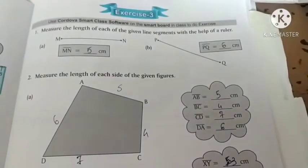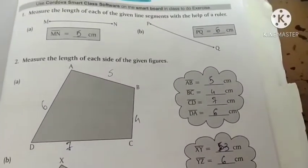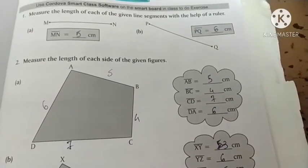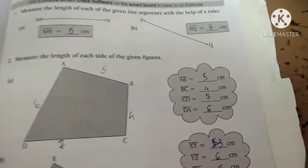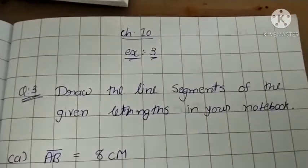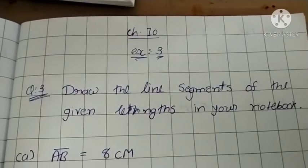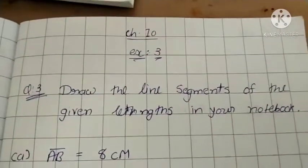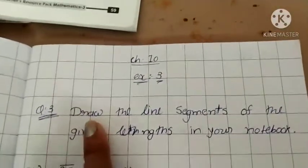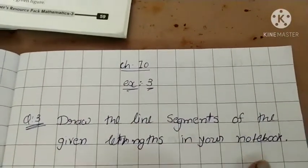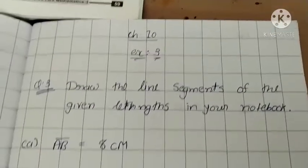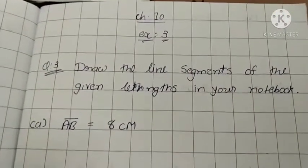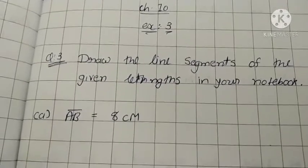So today, we are discussing exercise number 3, question number 1 and 2. These two questions, you have to draw and write in CW exactly like this. So I hope you all are clear. Thank you. Good morning student. In maths standard class, chapter number 10. In last lecture, we have already discussed exercise number 3, question number 1 and 2. So now moving on, question number 3.